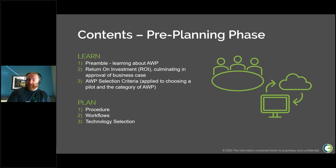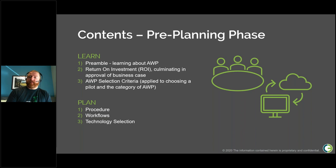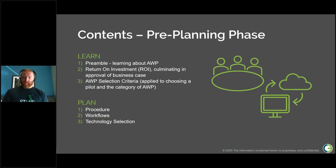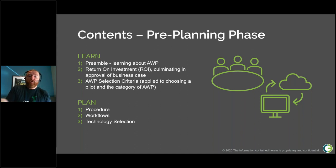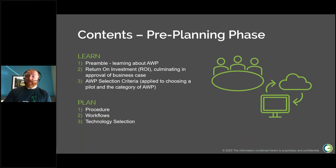A major question addressed in the toolkit is what to consider when looking at AWP technology. The old wisdom held that you need to nail down your AWP process before thinking about technology, but the O3 platform has been purpose-built to support AWP from start to finish with CII best practices baked in. This avoids two separate large change management situations, combining process and technology so the technology provides a solid foundation for AWP implementation.